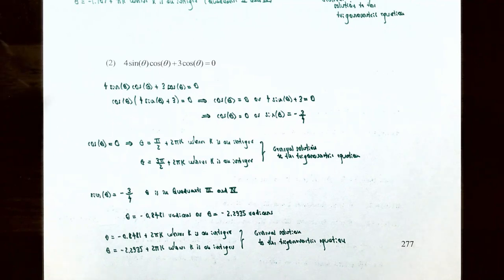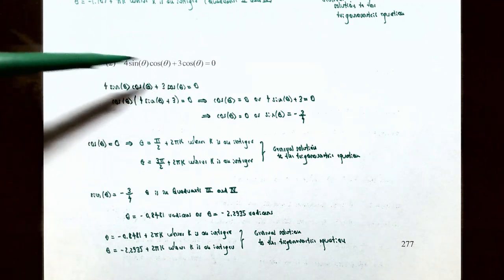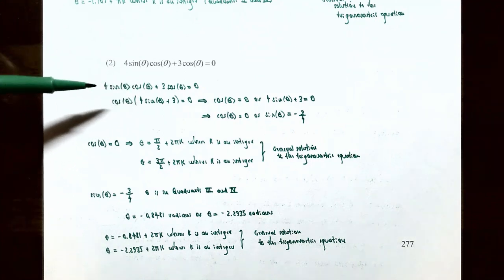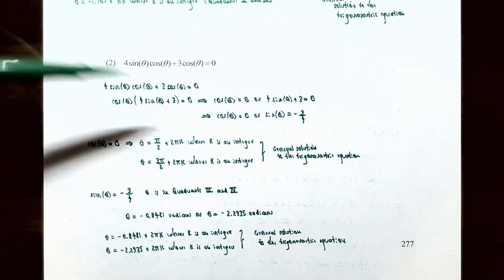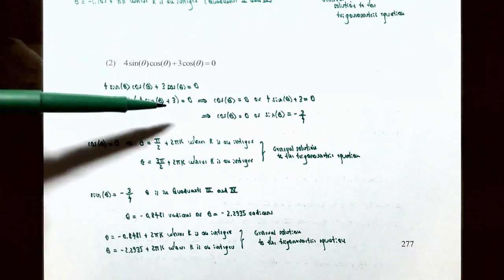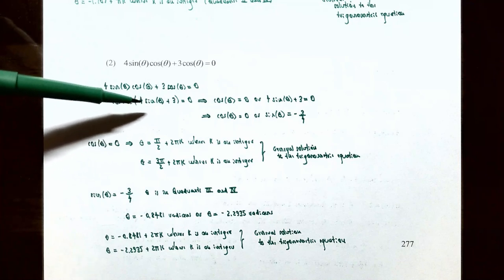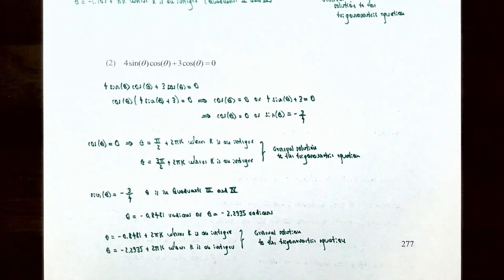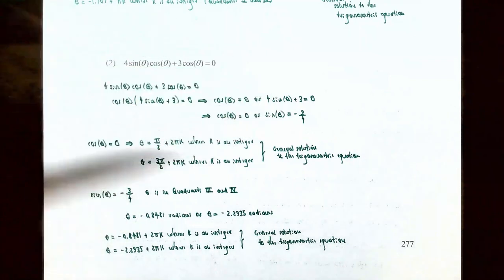Number two: solve 4sinθ cosθ + 3cosθ = 0. Notice that cosθ is common to both terms on the left side, so you can factor out cosθ. From the first term 4sinθ cosθ, factoring out cosθ leaves 4sinθ; from the second term 3cosθ, factoring out cosθ leaves 3. So in factored form: cosθ(4sinθ + 3) = 0. Using the zero product property, one of the factors must be zero: cosθ = 0 or 4sinθ + 3 = 0.